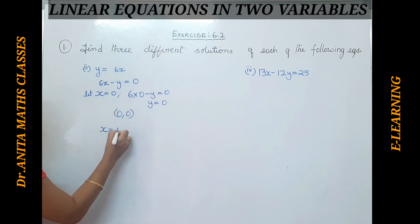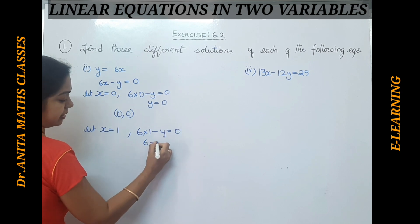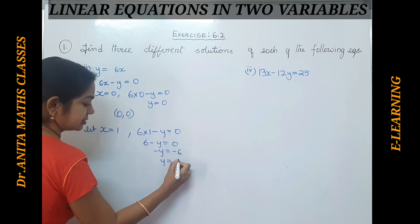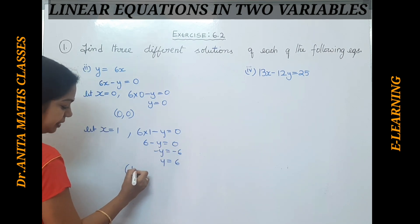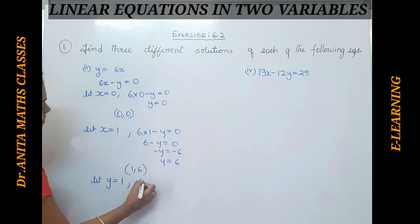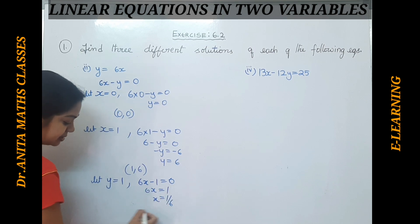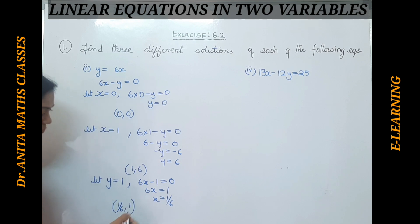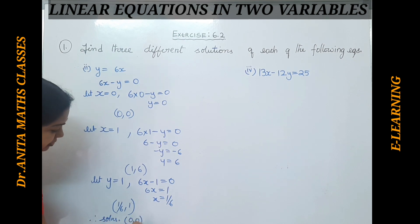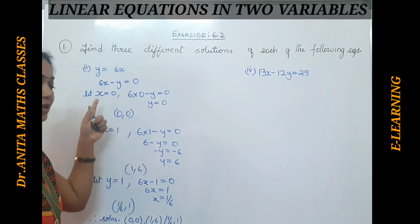Let x equal to 1: 6 into 1 minus y equals 0, so y equals 6. The ordered pair is (1, 6). Now let y equal to 1: 6x minus 1 equals 0, so x equals 1 by 6. The ordered pair is (1/6, 1). So the three solutions are: (0, 0), (1, 6), and (1/6, 1). Any three valid solutions are acceptable — there is no hard and fast rule on which values to choose.